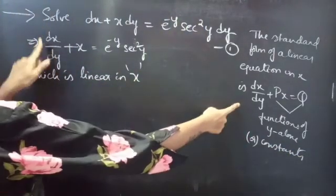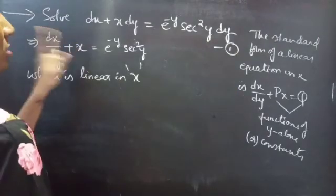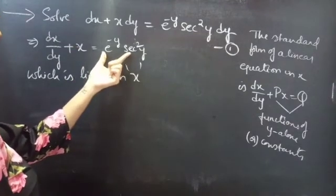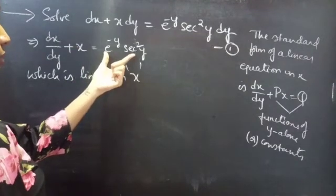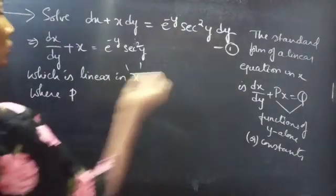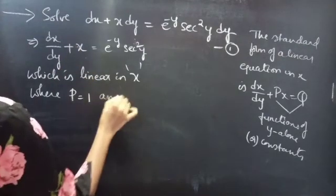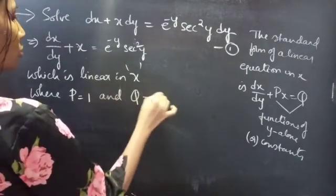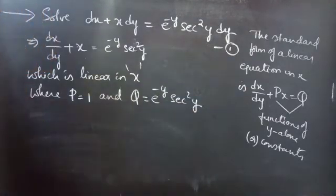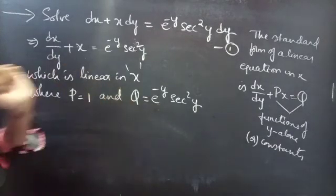Now by comparing these two, we have dx by dy plus 1 into x equals to q. Simply by comparing, we get p and q where p equals to 1 and q equals to e power minus y secant square y. So here p is a constant and q is a function of y.